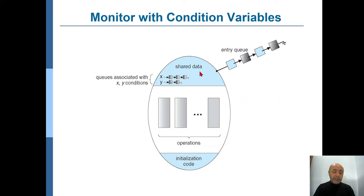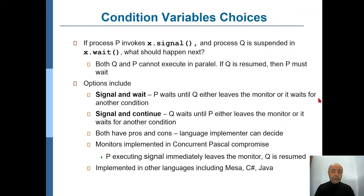If we revise that scheme, now among the shared data we also have some conditions like x and y, and each condition will have its own waiting queue in addition to the entry queue for the monitor. If a process P invokes signal on some condition variable x, one of the processes in the queue waiting for that condition will be released by the system. But if there are several processes waiting to be released, one question is: which one is to be released?